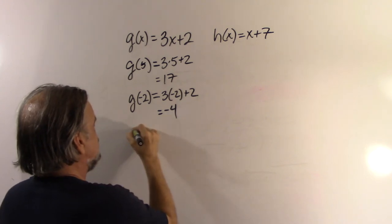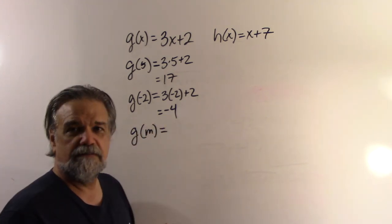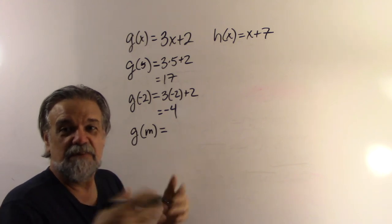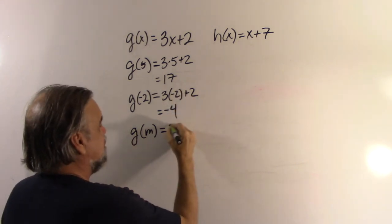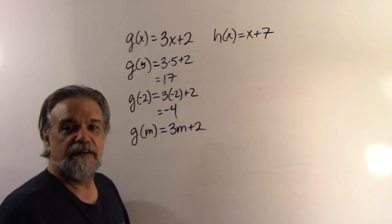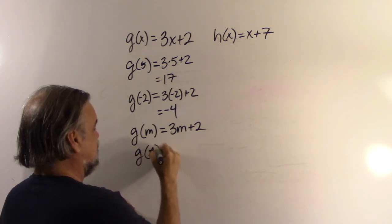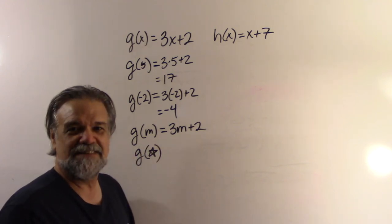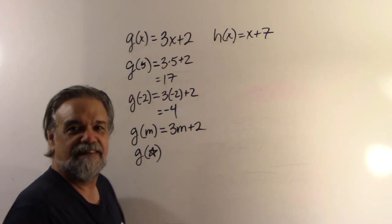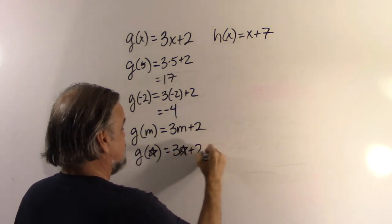If I had g(m), I don't know what m is, but, you know, I'll play along. This will be 3 times m plus 2. If I have g(star), again, that's kind of weird, but all right, I'll call it 3 star plus 2.